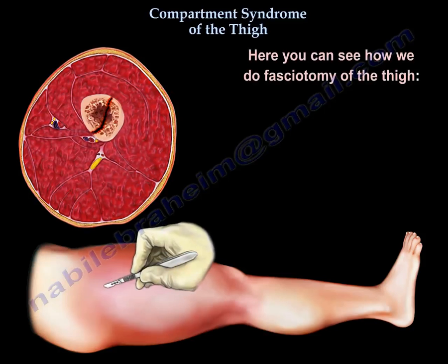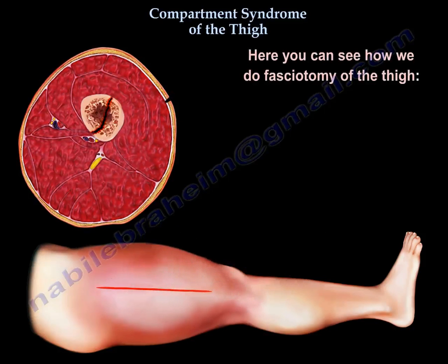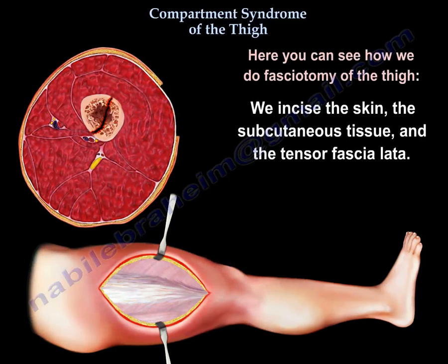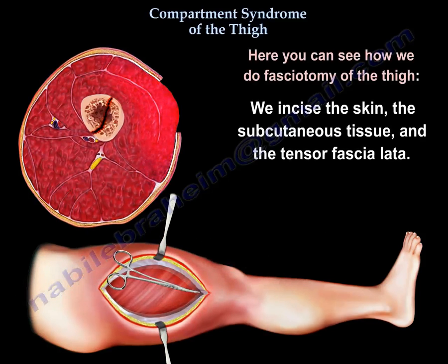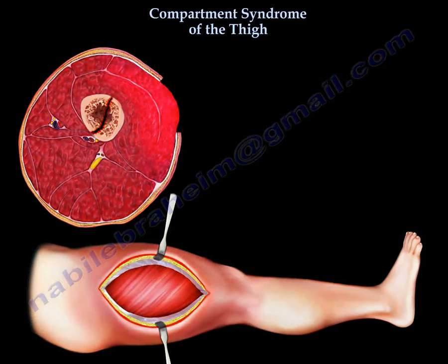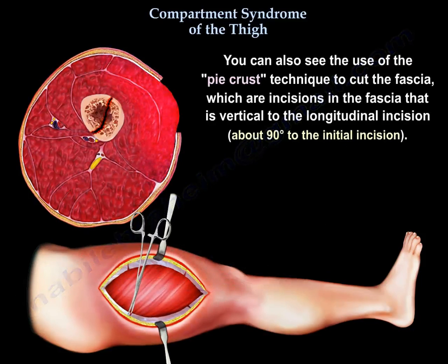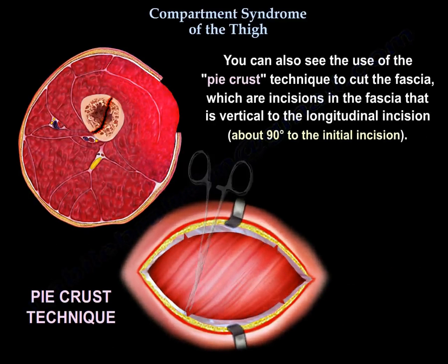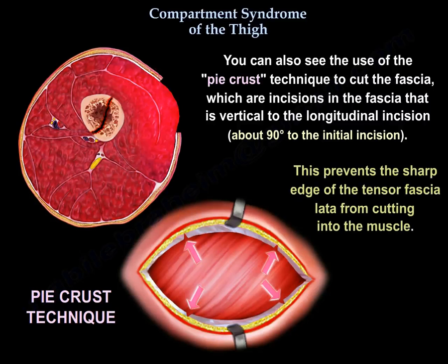Here you can see how we do fasciotomy of the thigh. We incise the skin, the subcutaneous tissue, and the tensor fascia lata. We can also see the use of the pie-crust technique to cut the fascia — incisions in the fascia that are vertical to the longitudinal incision, about 90 degrees to the initial incision. This prevents sharp edges of the tensor fascia lata from cutting into the muscle.